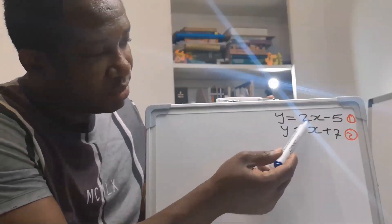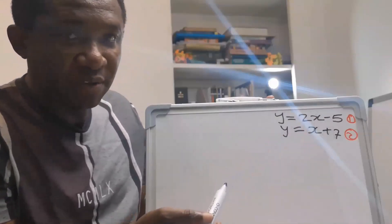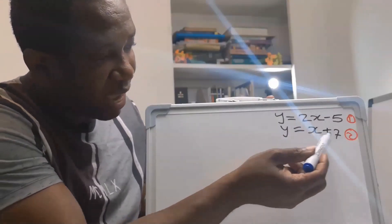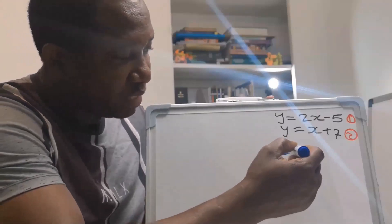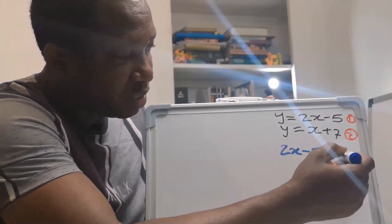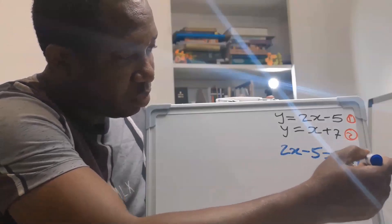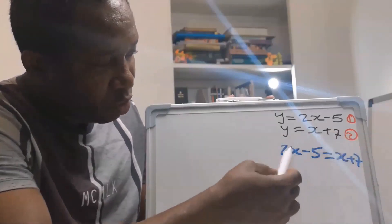Y is 2X minus 5, and Y is X plus 7. This shows that 2X minus 5 is equal to X plus 7.